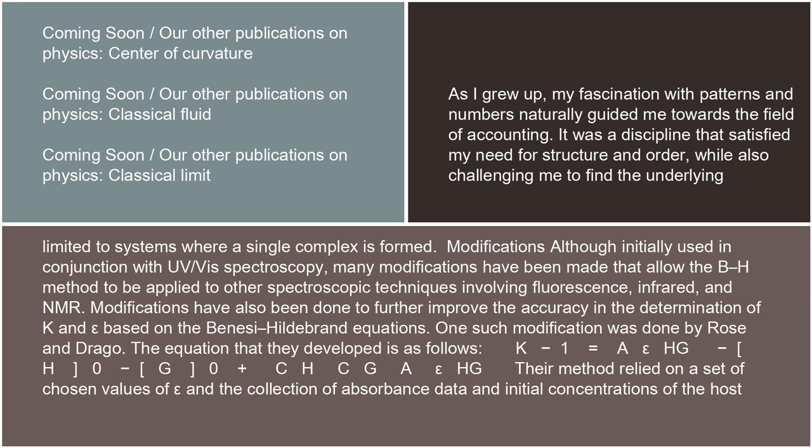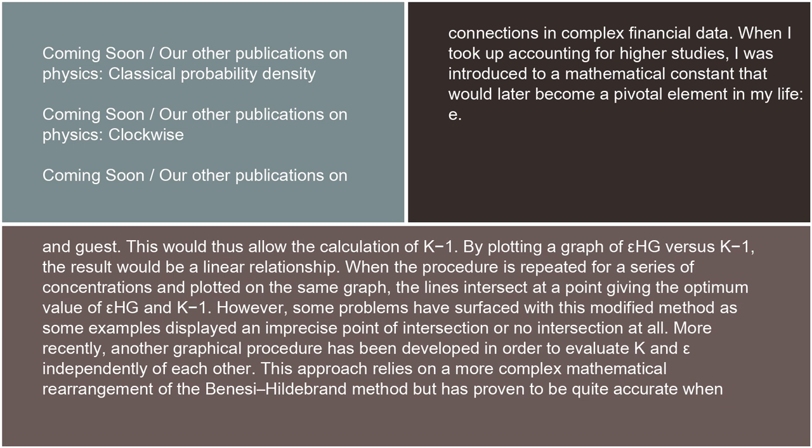One such modification was done by Rose and Drago. The equation that they developed is as follows: Ka⁻¹ = (ε_HG − [H0] − [G0] + C_H · C_G · A · C_G · A · ε_HG). Their method relied on a set of chosen values of epsilon and the collection of absorbance data and initial concentrations of the host and guest, which would thus allow the calculation of Ka⁻¹. By plotting a graph of ε_HG versus Ka⁻¹, the result would be a linear relationship. When the procedure is repeated for a series of concentrations and plotted on the same graph, the lines intersect at a point giving the optimum value of ε_HG and Ka⁻¹. However, some problems have surfaced with this modified method, as some examples displayed an imprecise point of intersection or no intersection at all. More recently, another graphical procedure has been developed in order to evaluate K and epsilon independently of each other. This approach relies on a more complex mathematical rearrangement of the Benesi-Hildebrand method, but has proven to be quite accurate when compared to standard values.